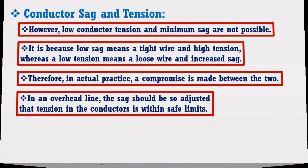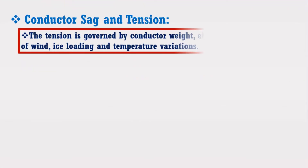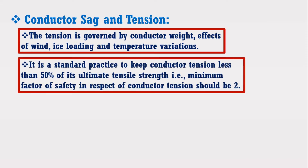The tension is governed by the conductor weight, effects of wind, ice loading, and temperature variations. It is a standard practice to keep the conductor tension less than 50% of its ultimate tensile strength, meaning that the minimum factor of safety in respect of conductor tension should be 2.